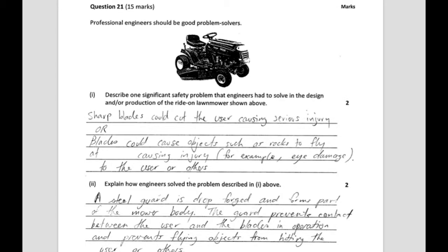Moving to short answer questions. The two main hazards discussed were blades cutting people and rocks getting in your eye. The question says 'describe' so you can't just write 'sharp blade' - you need to say sharp blades cause serious injury. For the safety guard: a metal plate prevents people from touching the blade or stops rocks getting in people's eyes. That's the minimum for two marks.